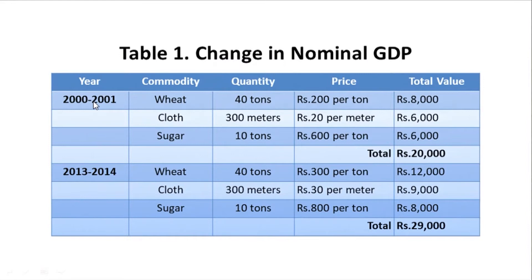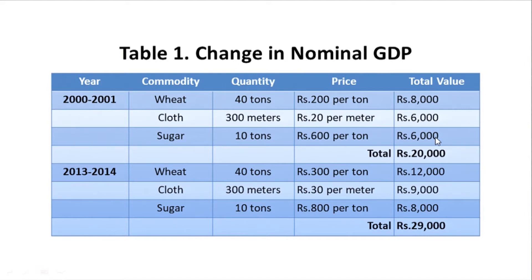In Table 1, the first column shows the years: 2000-2001 and 2013-14. The commodities are wheat, cloth, and sugar. In 2000-01, quantity produced of wheat is 40 tons, cloth is 300 meters, sugar is 10 tons. Price of wheat is rupees 200 per ton, so the value is rupees 8,000. Cloth price is rupees 20 per meter, giving rupees 6,000. Sugar price is rupees 600 per ton, giving rupees 6,000. Adding all these gives nominal GDP of rupees 20,000.